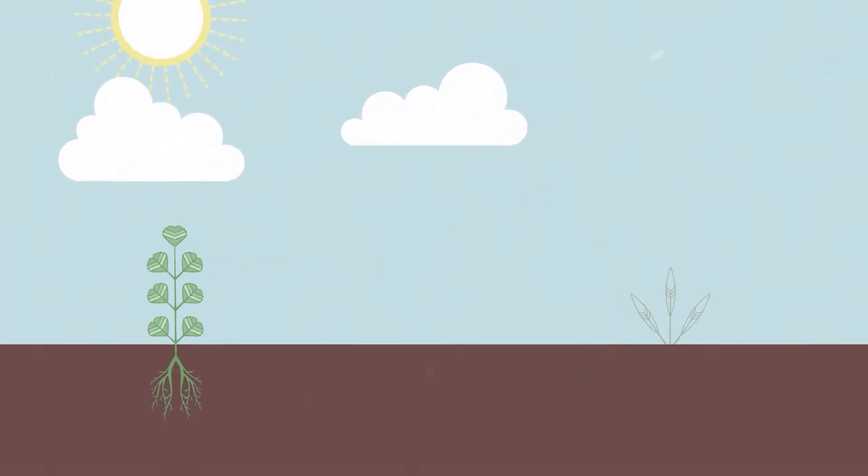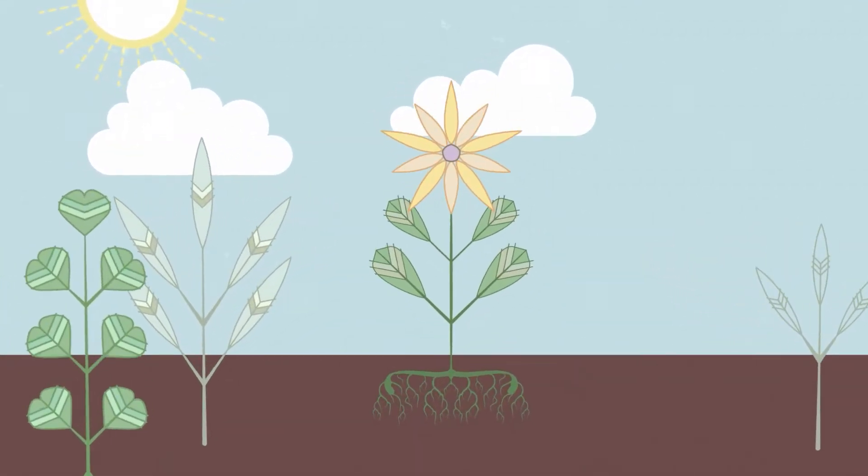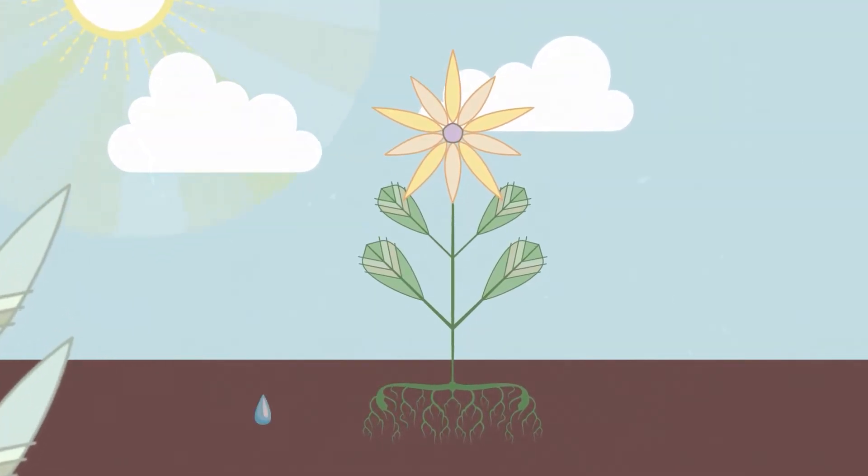Plants can help us reduce the effects of climate change through the natural process called photosynthesis. Plants take in sunlight, water, and carbon dioxide from the world around them. Plants use those ingredients to create sugars and oxygen.